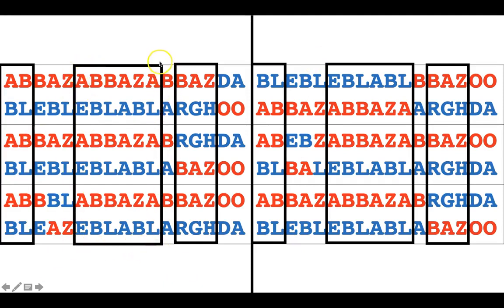But look in here — we still have another haplotype block because this is a stretch of the chromosome where everybody is either ABBAZA or EBLABEL. If you look, you can see that everybody in the population is either one type or the other type. There are six individual dogs represented here, each with two copies of the DNA code since they inherited one chromosome copy from mom and one from dad.